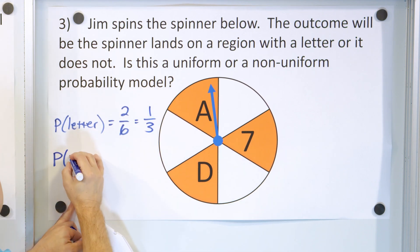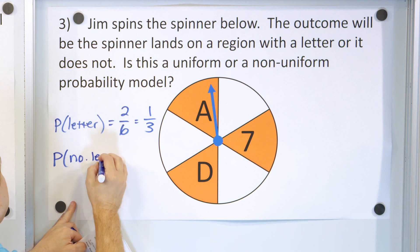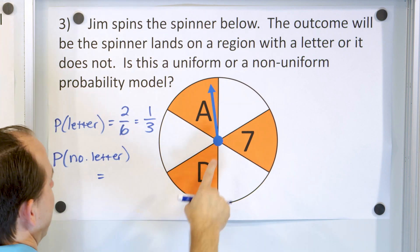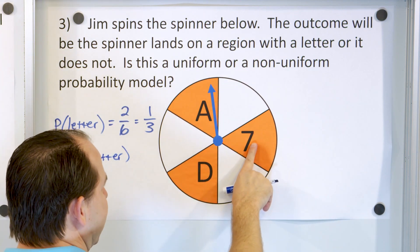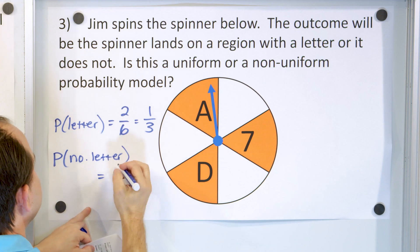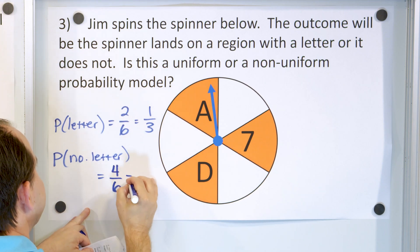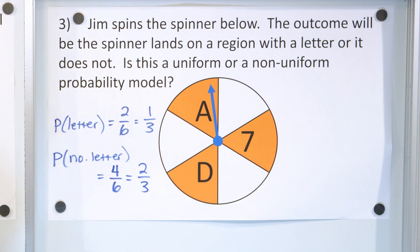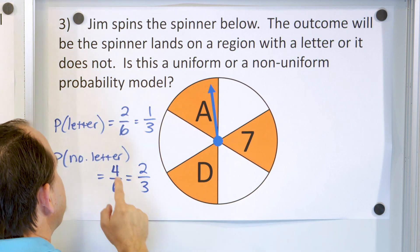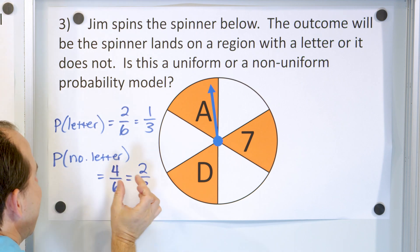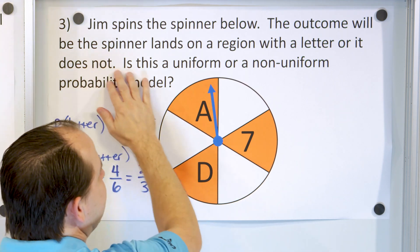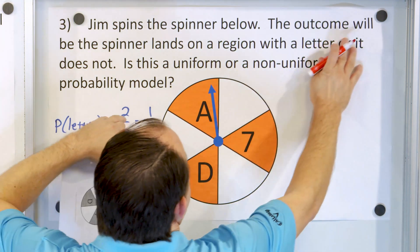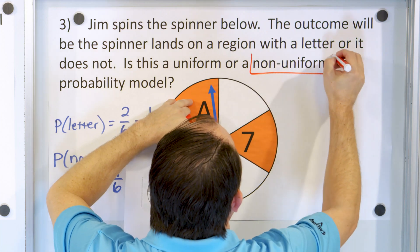What is the probability of no letter? How many spaces don't have a letter on them? One, two — that's not a letter, that's a number — one, two, three, four. So four out of six. When you divide by two, this reduces to two-thirds. The probability of getting a letter is one-third and the probability of getting no letter is higher: two-thirds, because there are more spaces that don't have letters on them. So is this a uniform or non-uniform model? This is non-uniform, because the probabilities of the outcomes are not the same.